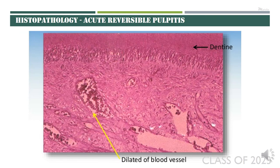These various stages of pulpitis can also be studied from a histologic point of view, which correlates to the pathologies of these conditions. Beginning with acute reversible pulpitis: as discussed before, the inflammation will be confined to a localized space — generally right below the dentine, near the dento-pulpal junction. There will be mild transient changes including dilatation of blood vessels resulting in engorgement, causing hyperemia. There will also be a few acute inflammatory cells — predominantly neutrophils — infiltrating this localized area.